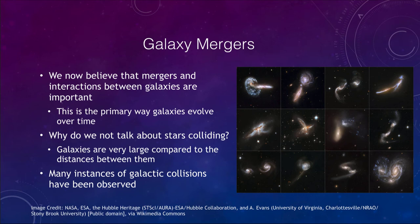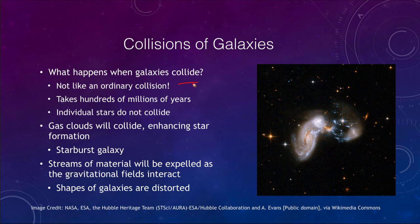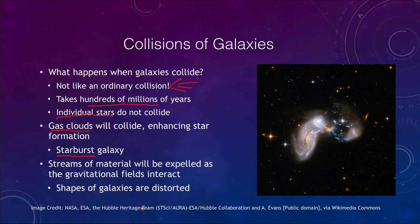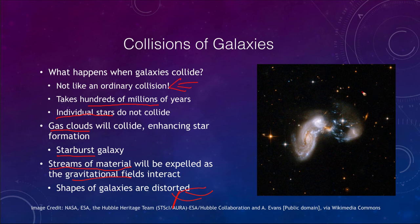A galaxy collision is not like an ordinary collision of cars or other objects. Galaxy collisions can take hundreds of millions of years, and the individual stars do not collide. What does collide are the gas clouds, which enhances star formation — giving rise to what we call a starburst galaxy, where galaxies experience a burst of star formation because their gas clouds collided together. We also see streams of material expelled as the gravitational fields interact, distorting the shapes of the colliding galaxies.